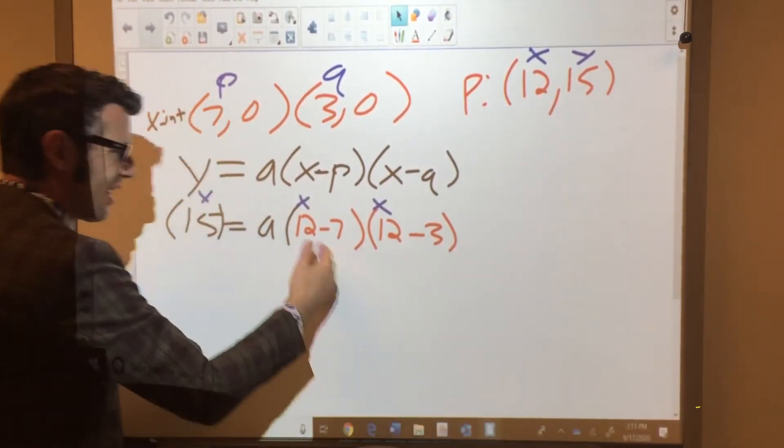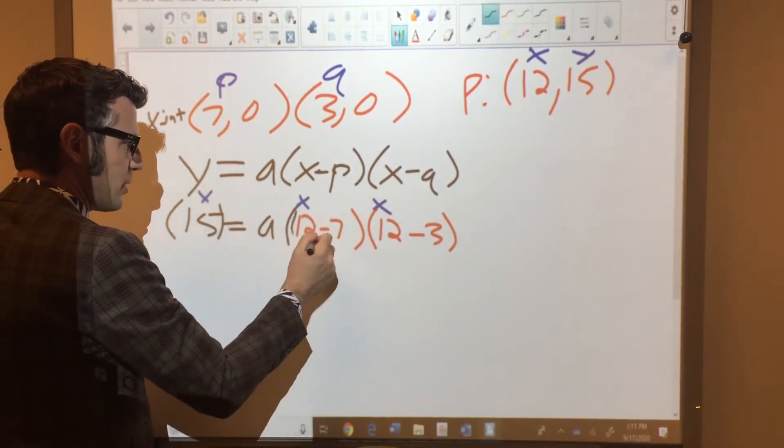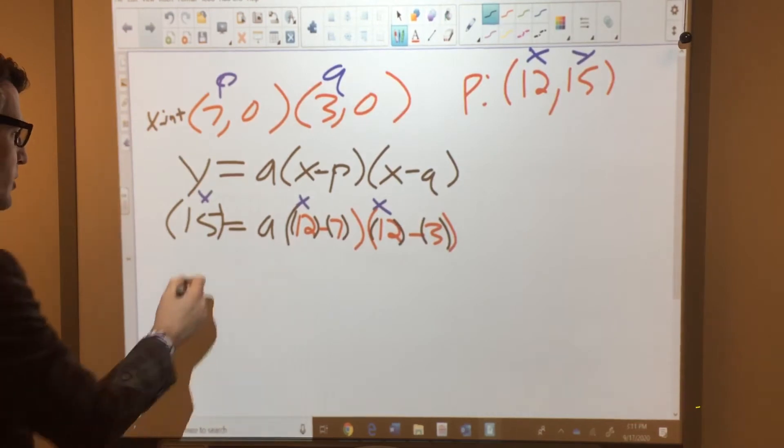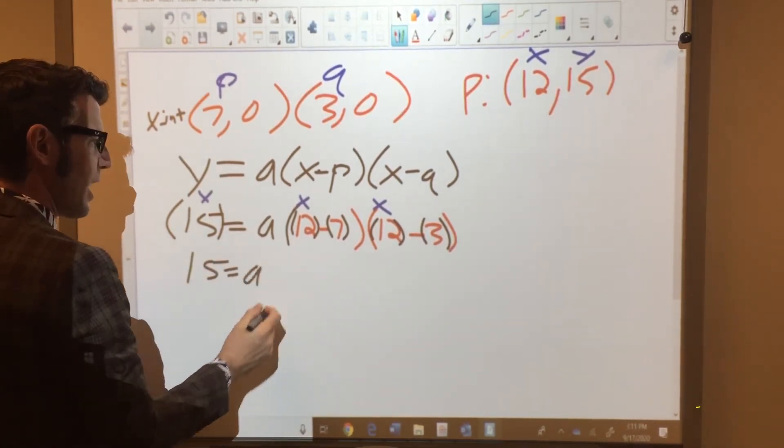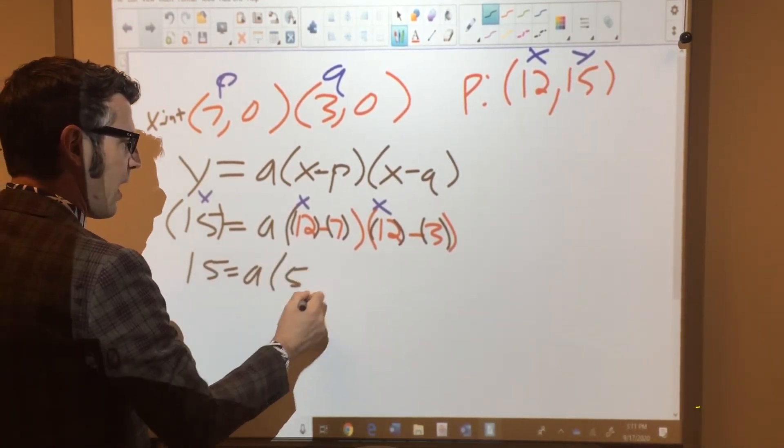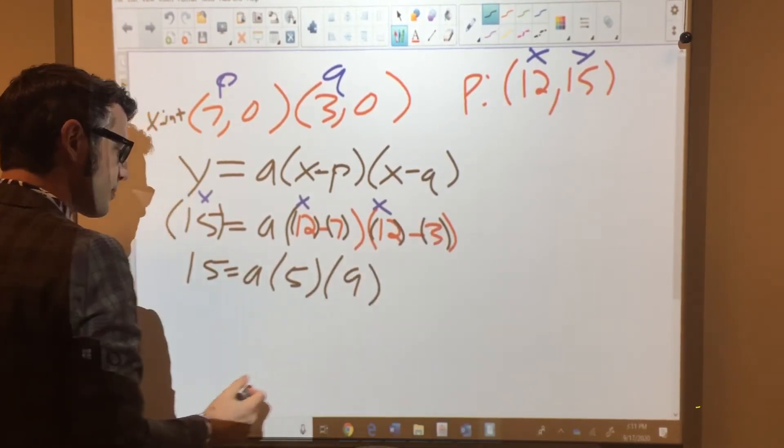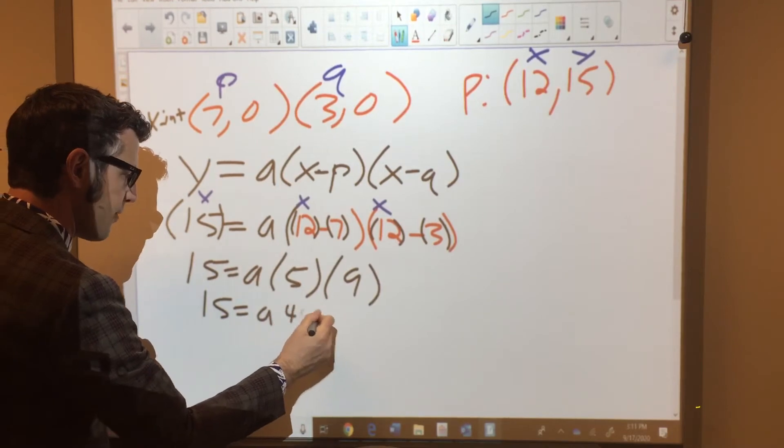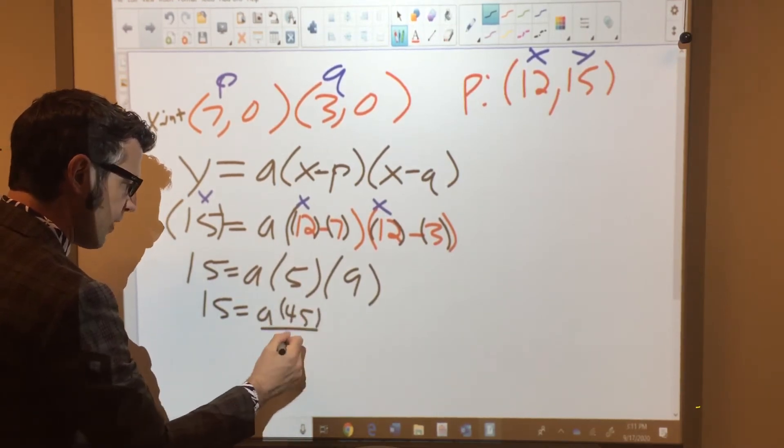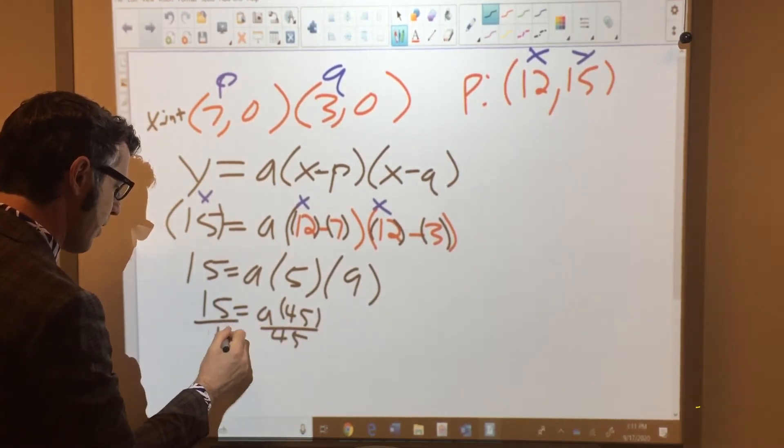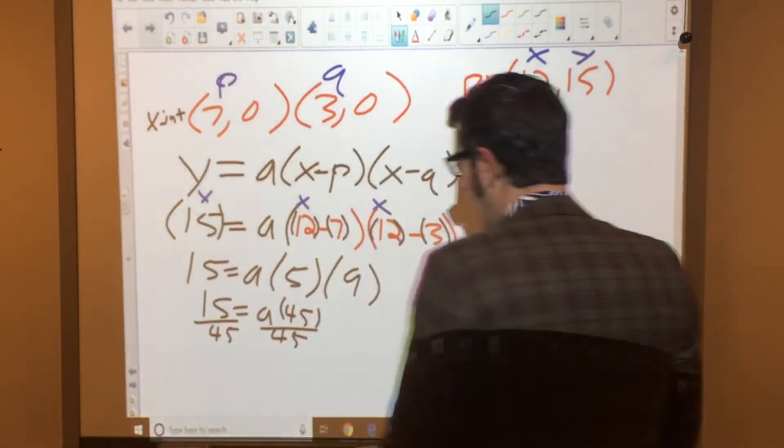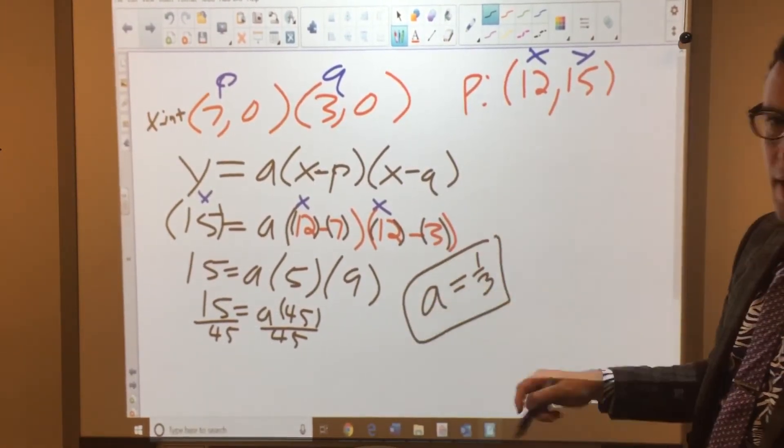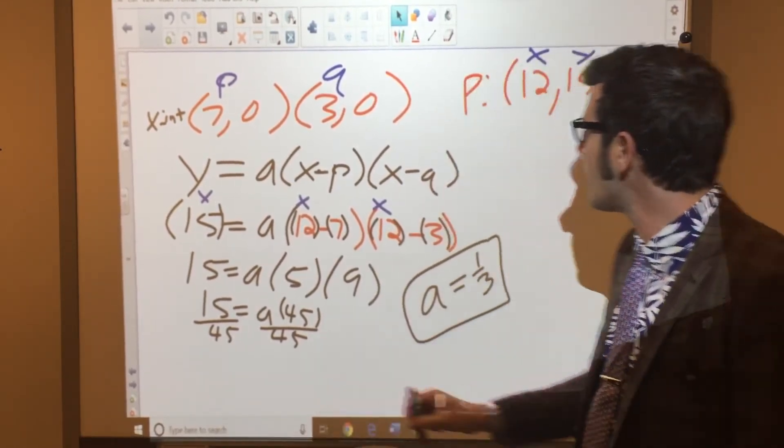And, you know, again, I can put parentheses around all this stuff, and I probably should. Hopefully it doesn't convolute it too much for you. So you have 15 equals a times 5 times 9. So it's 15 equals a times 45. And then if we divide by 45, we get 1 3rd. So a equals 1 3rd. Oh, yeah, there's one that gives us a nice fraction for your a value.